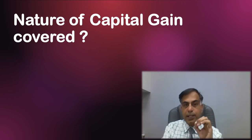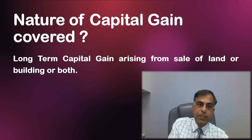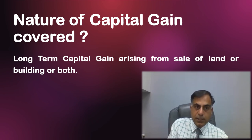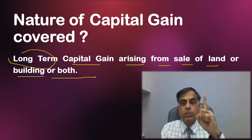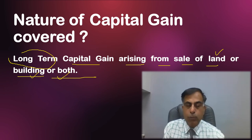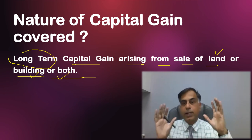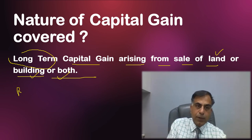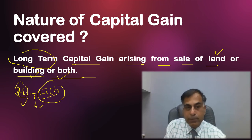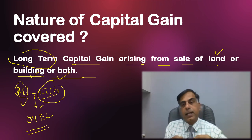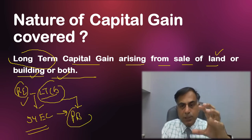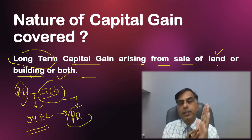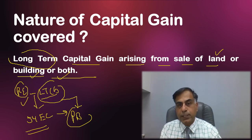Now let us discuss the nature of capital gain covered under Section 54EC. It is very specifically mentioned that the capital gain exemption is available when there is a long term capital gain arising from sale of land or building or both. This includes residential or commercial property, and agricultural or non-agricultural land. To put it simply, if a person earns long term capital gain on sale of real estate and wishes to claim exemption under Section 54EC, they are entitled to avail the exemption if they reinvest their long term capital gain into prescribed bonds.